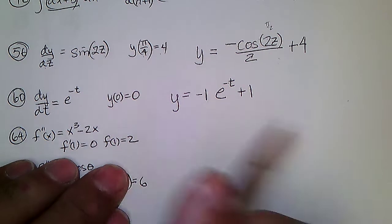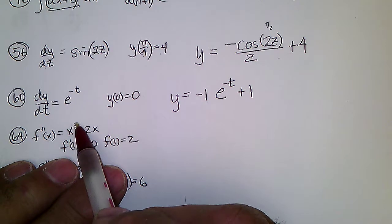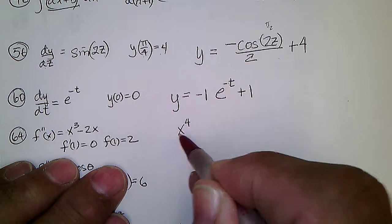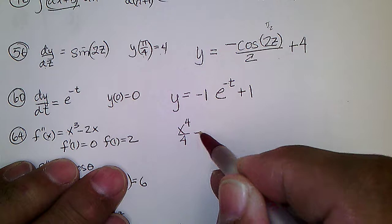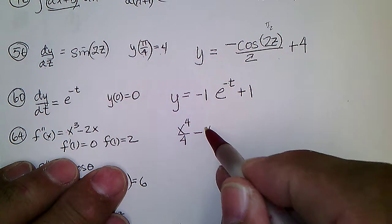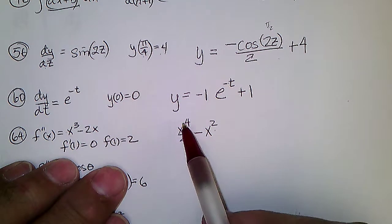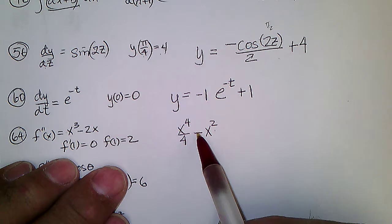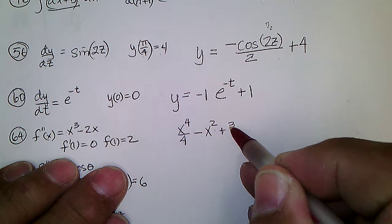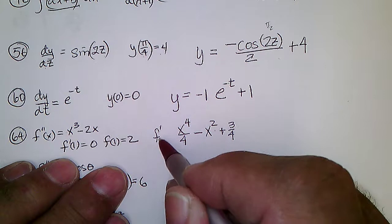Problem 64: if this is the second derivative, then the first derivative would be found by raising the power by 1 and dividing by that power. So this would be x to the 4th over 4, minus — raising the x squared by 1 gives x cubed, but over 2 cancels the 2 — so it's just x squared. If we put in 1, we're supposed to get 0: 1/4 minus 1 is negative 3/4, so we add plus 3/4. That's f prime of x.